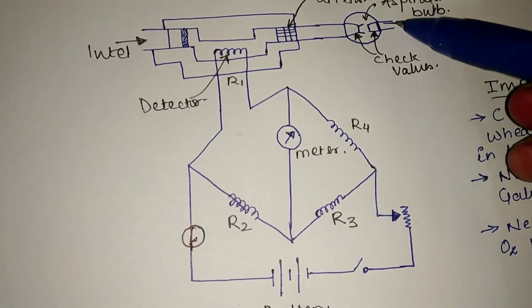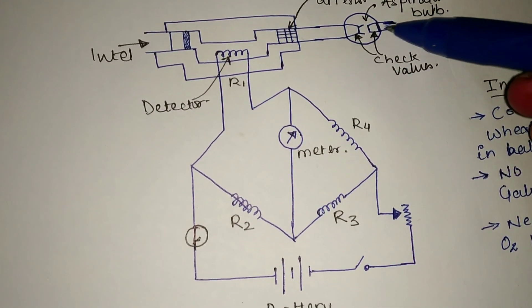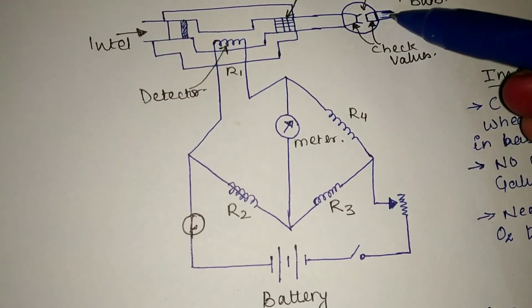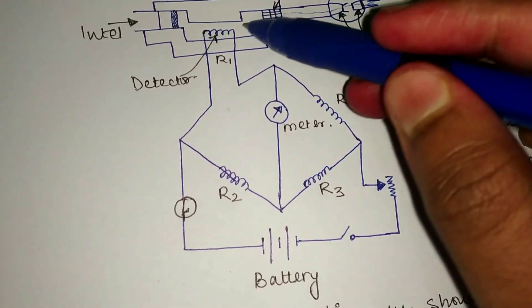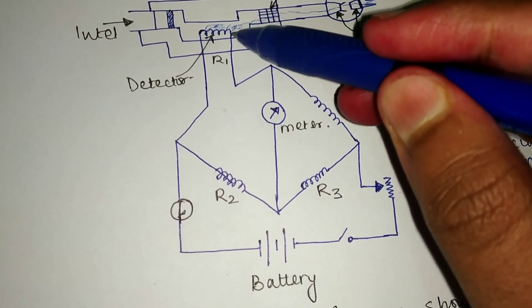Gas enters through this chamber using an aspirator bulb and a flexible tube. The gas enters from here and goes to the flashback arrestor. Now when gas comes here it will burn because this is a heated filament.